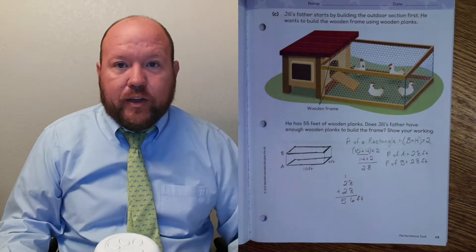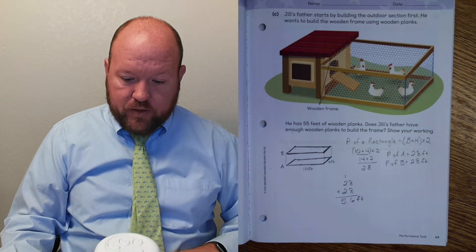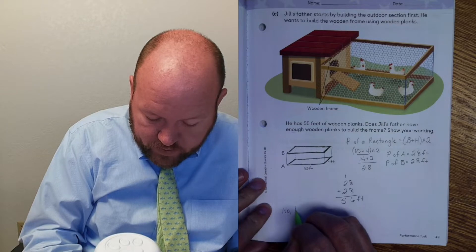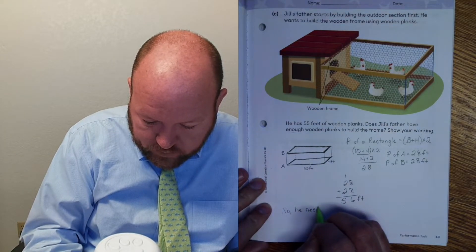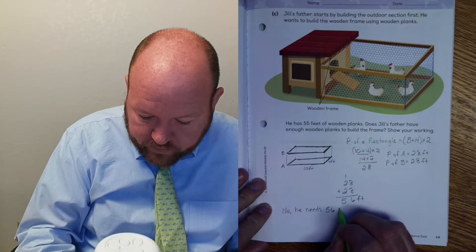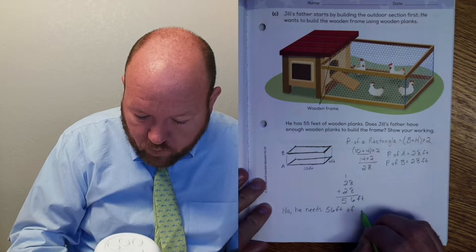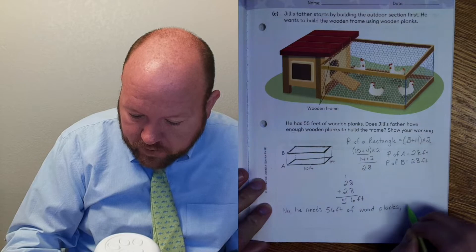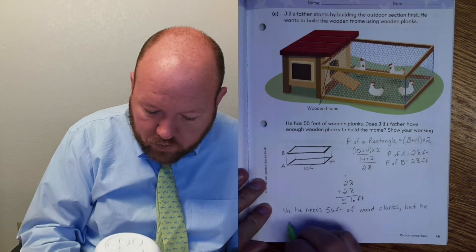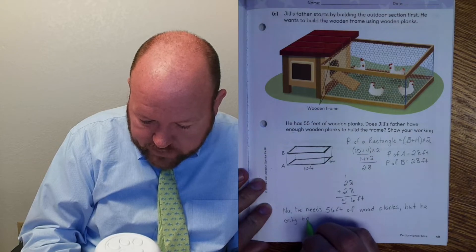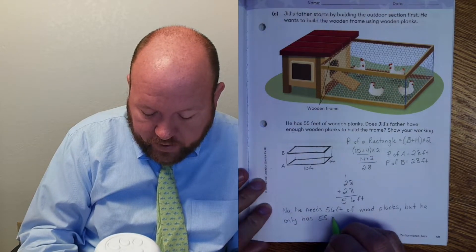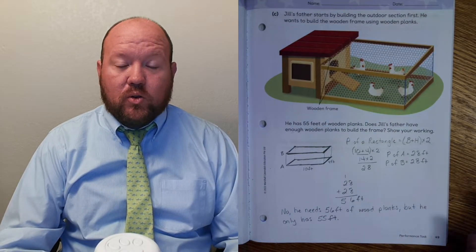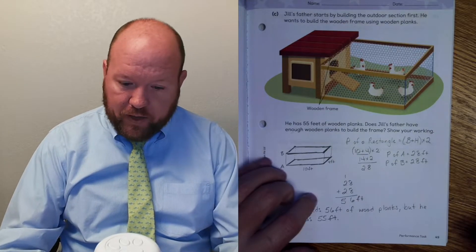So if he has 55 feet, is that enough? No. So, does he have enough? No. He needs 56 feet of wood planks, but he only has 55 feet. So if we keep this model, he's going to have to go back to the store and buy some more wood. Let's turn over to page 50.